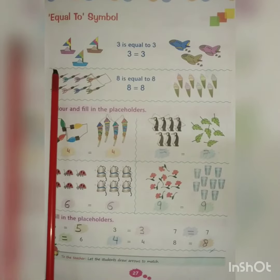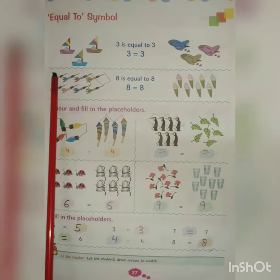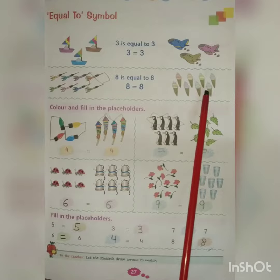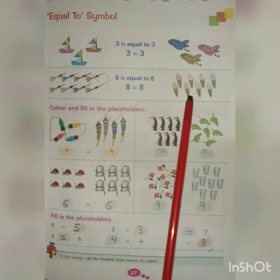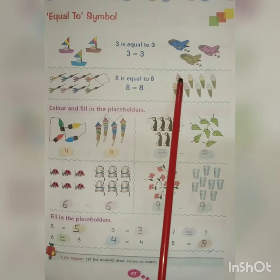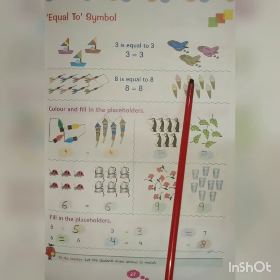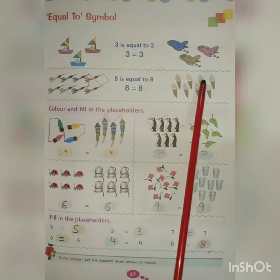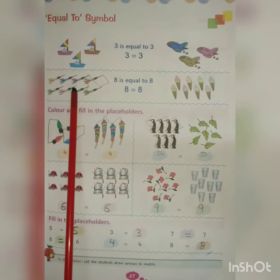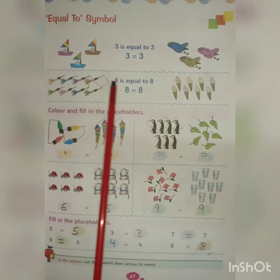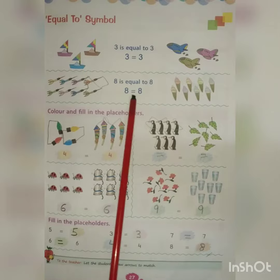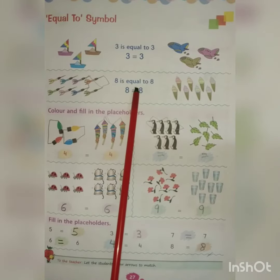In the next example, we have how many arrows? Eight. And you can see how many ice creams are here — you can count: one, two, three, four, five, six, seven, eight. So here we can say eight is equal to eight.